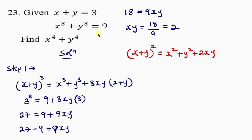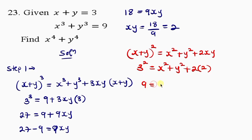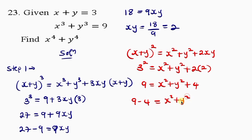Let's substitute our values. x plus y, as given in the question, is 3, so we put 3 there, squared. That gives us x squared plus y squared — which is what I'm looking for — plus 2xy. We got xy to be 2, so we put 2 there. 3 squared gives 9, equal to x squared plus y squared plus 2 times 2, which is 4. Moving 4 to the left: 9 minus 4 is 5, equal to x squared plus y squared. So x squared plus y squared equals 5.